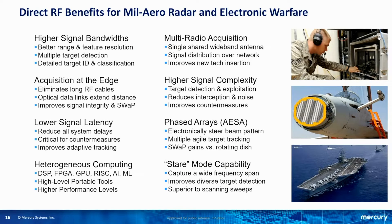Direct RF has many advantages: higher signal bandwidths, acquisition at the edge, lower signal latency with the direct connection between data converters and the FPGA, heterogeneous computing with AI and ML, multi-radio capability, and higher signal complexity with additional FPGA resources. For phased arrays, shrinking the size, weight, and power of each channel means that if you have a hundred or a thousand channels, you've eliminated all that RF down-conversion circuitry that many times over — a huge advantage. The stare mode capability means you can look continuously at a very wide band instead of scanning to find something, letting you monitor a target and see everything in real time within that band.